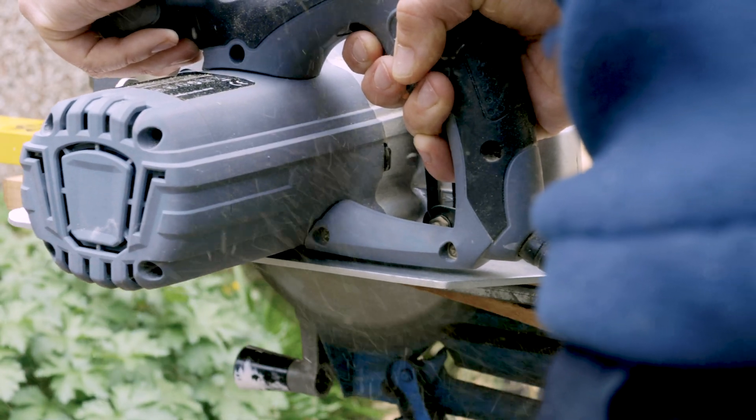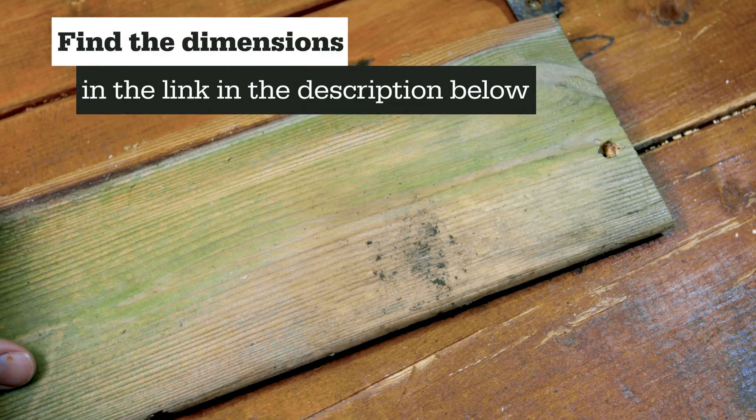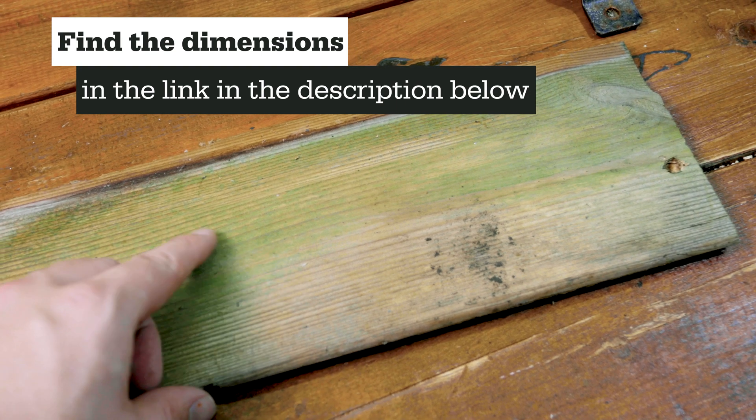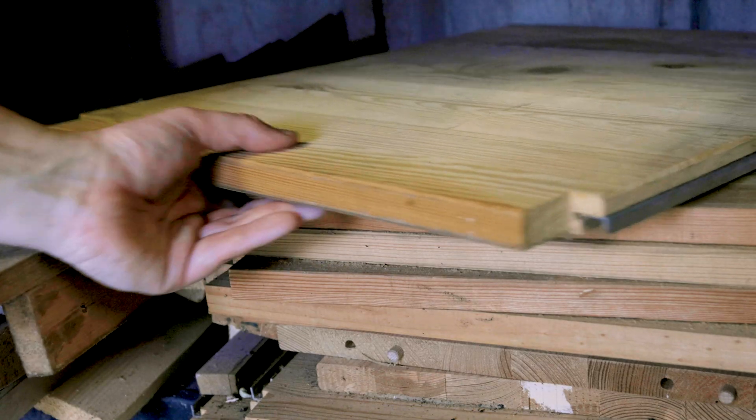The best material to use is untreated, rough sawn wood, like this. This is so the bats can grip.